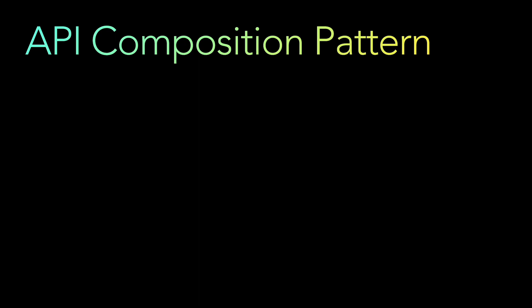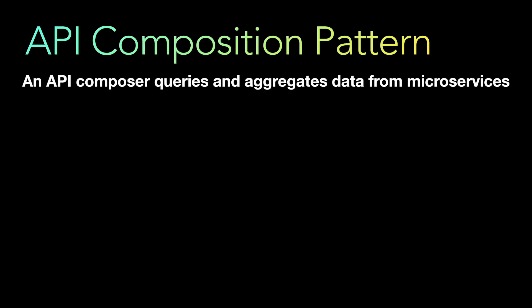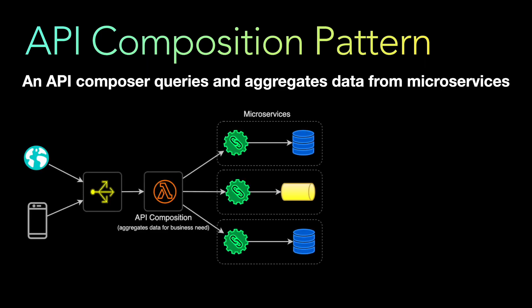The API composition pattern builds an API composer which queries and aggregates data from the respective microservices and then sends it back to the business according to whatever data they need. Different microservices store and retrieve data from their own databases, queues, or wherever they persist data.